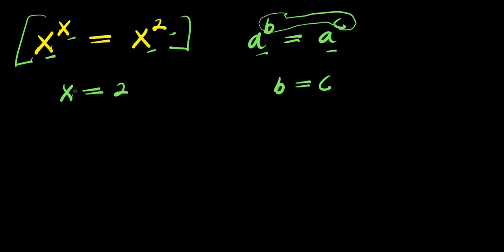In this particular case, we have x^x equals x^2. The bases are the same, so we can equate the exponents, which gives x equals 2. This is one of the solutions.